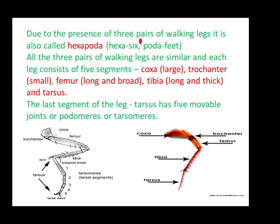Due to the presence of three pairs of walking legs, the cockroach is also called Hexapoda. Hexa means six and poda means feet, so cockroach comes under Hexapoda.